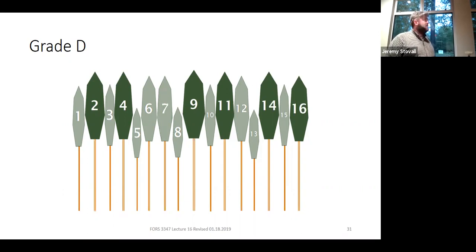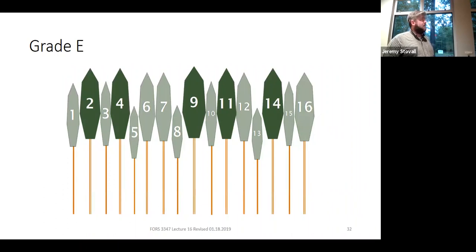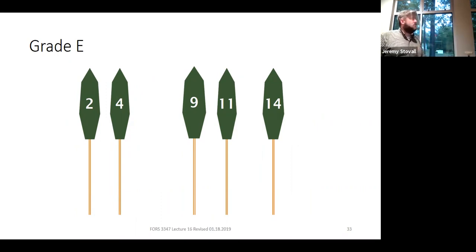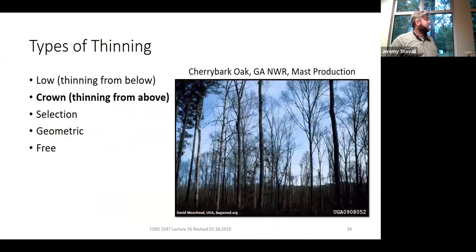Grade D starts getting you nervous about wasting growing space, and Grade E—where you leave only some of the dominants—starts looking like a seed tree or shelterwood. At Grade E you might get regeneration coming in, and you'd waste the growing space between trees. So Grade C is the Goldilocks sweet spot. Low thinning is usually straightforward, but in a hardwood stand with 30 different species it may not work as well—which is why that tree classification lab exercise you did most closely fits crown thinning.